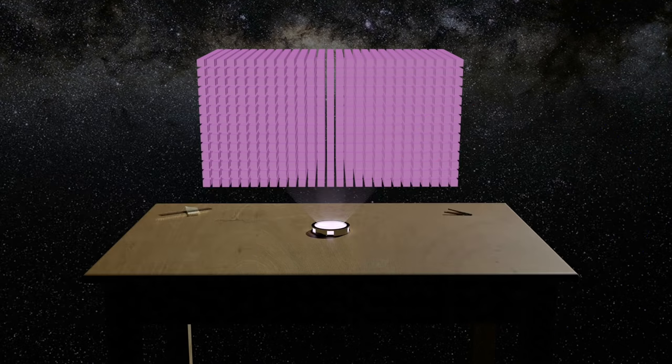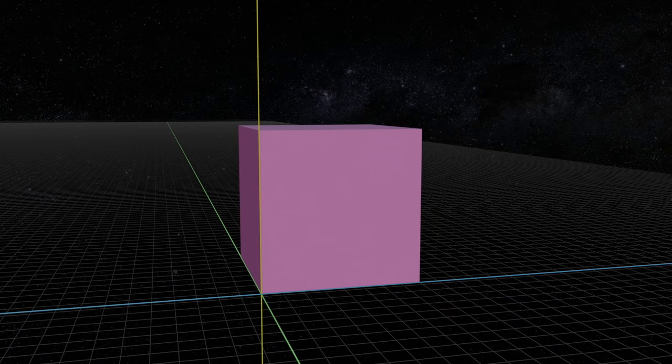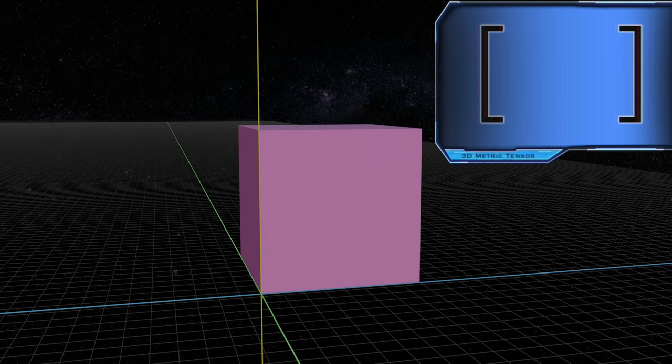Okay, let's zoom in on a particular cube. In three dimensions, the metric tensor has six components.